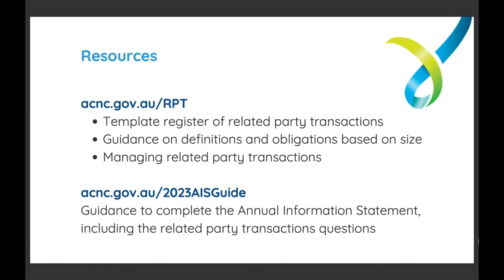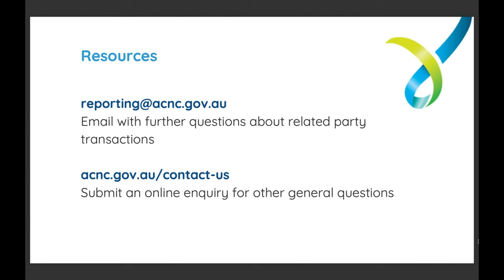We have some resources to help charities meet their obligations to report related party transactions. There's a template charities can download from our website — linked on our related party transactions web page — to keep track of related party transactions. You can record the related party name, nature of the relationship, description of the transaction, the amount, the dates and the relevant approval details. A couple of examples are already provided in the template to guide charities. All charities are welcome to use this template, especially smaller ones with limited resources. More details are available at acnc.gov.au/rpt.